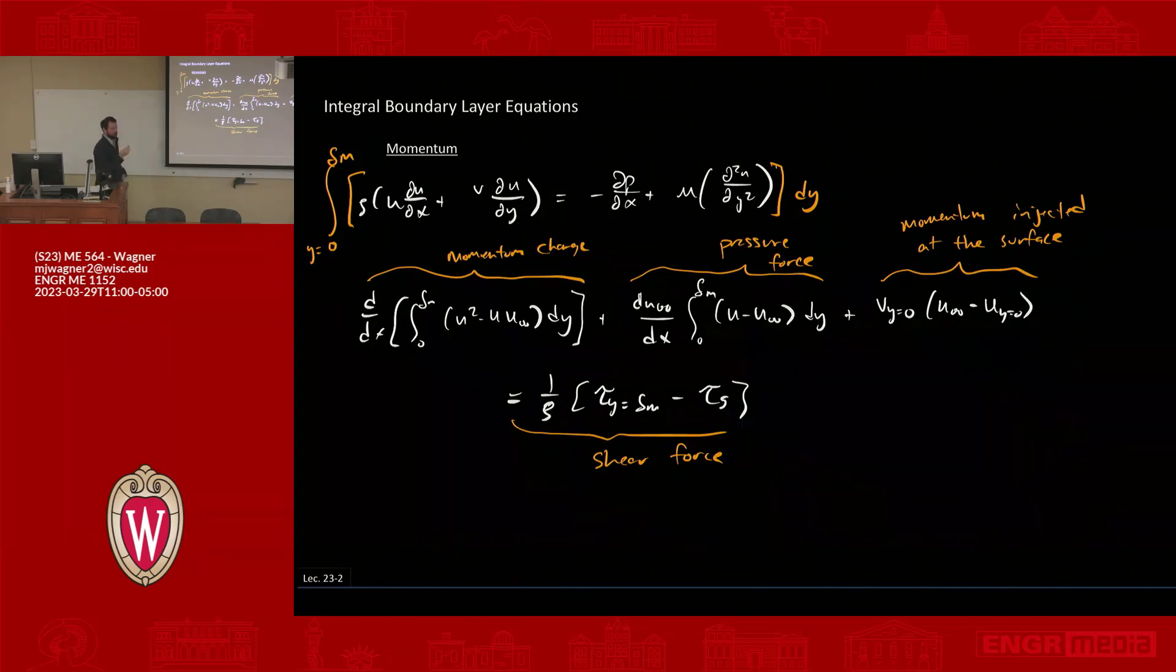You have a flow through a pipe. You're flowing in a pipe and there's mass that's being pulled out of that pipe as you go. That flow is slowing down.